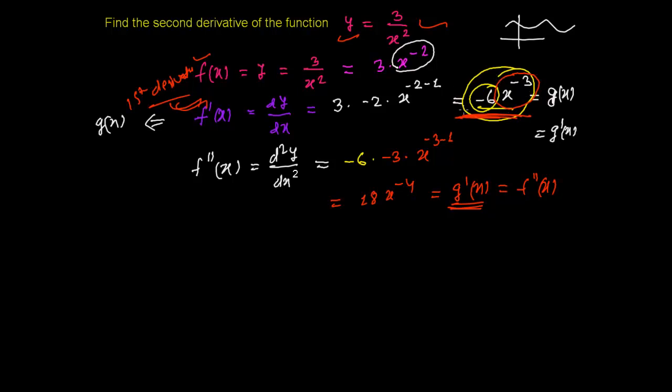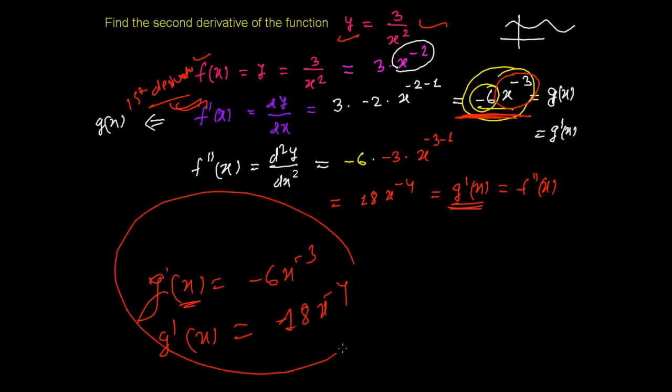Now again differentiate that function. After that what do you get? Another function. Suppose this is g of x - you got minus 6 x to the power minus 3. Now just differentiate it again with respect to x and you'll get g prime of x, which you already found is positive 18 x to the power minus 4. That's it, simple. You can find third, fourth or whatever you want to find in the same way, in a similar way.